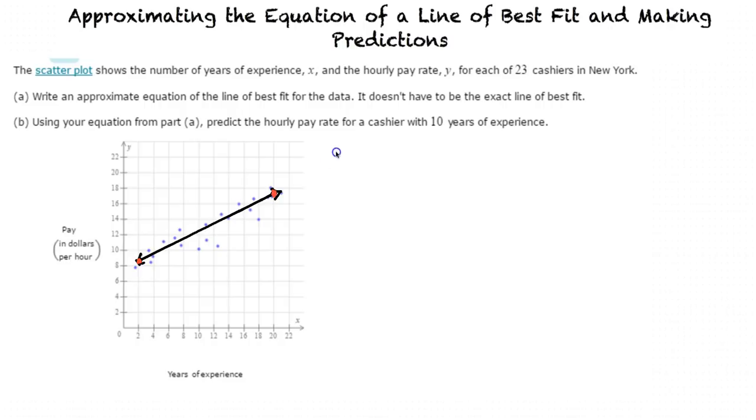Let's plug these into the slope formula. Our slope m is equal to y sub 2 minus y sub 1 over x sub 2 minus x sub 1. So in this case, it is 17 minus 8.5